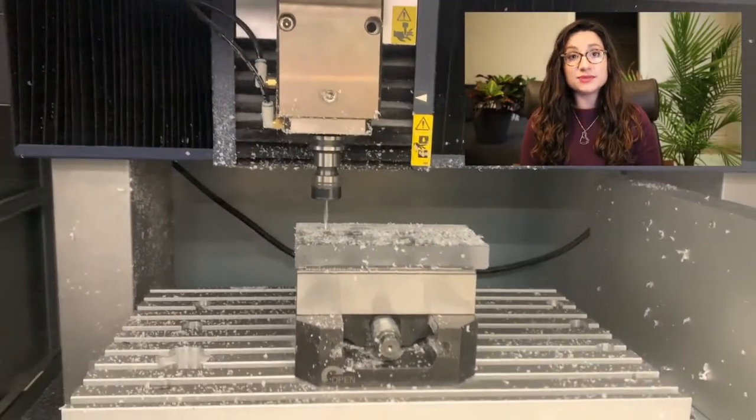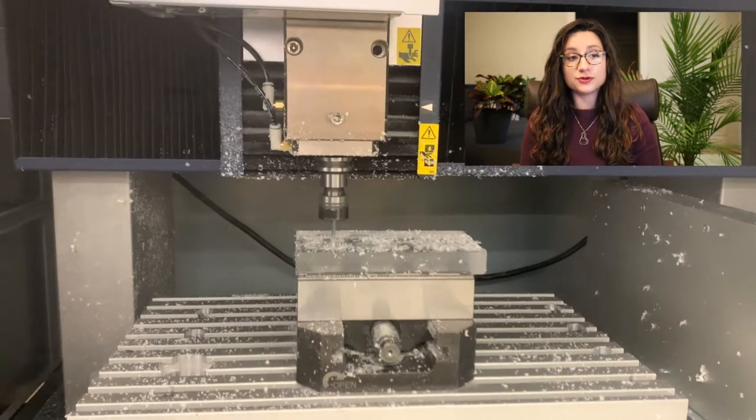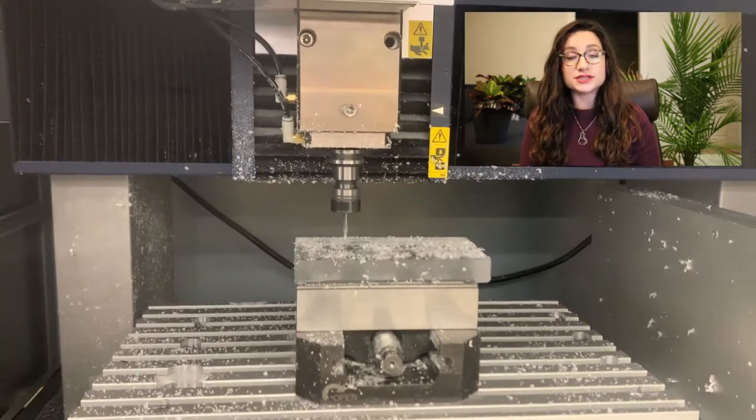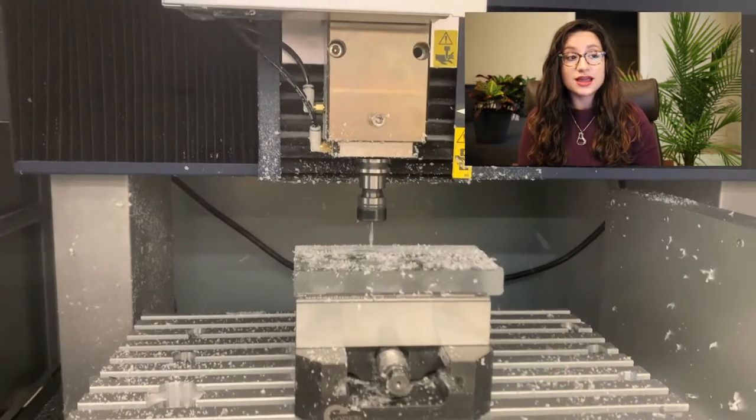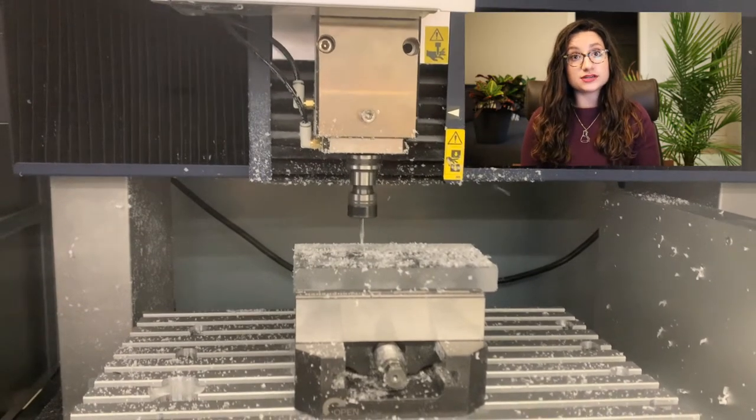The CNC machine is like a big drill controlled by a computer. It can make all different shapes in a block of plastic or metal, just by slowly drilling down into the material.